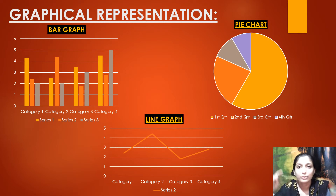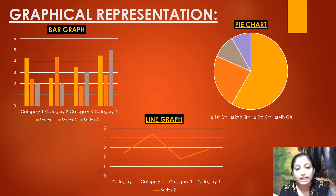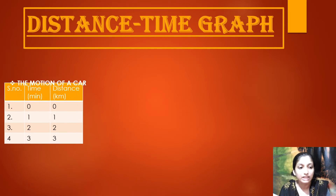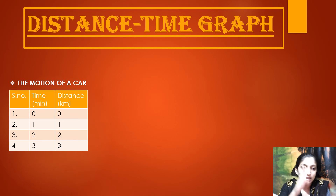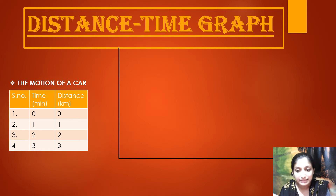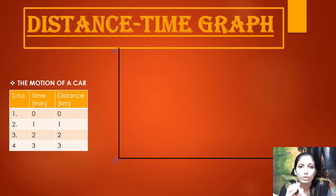These are the different types of graphs. We are going to represent time and distance using a line graph. Here we have a table with time on one side and distance on the other. To make the graph, I have drawn the x-axis and y-axis, with the origin marked as O, which is where both axes start.